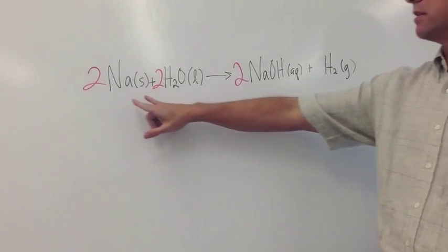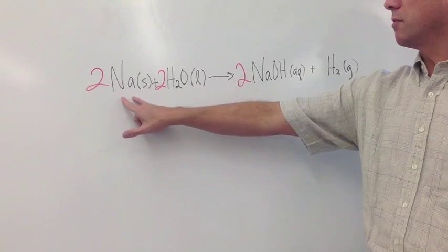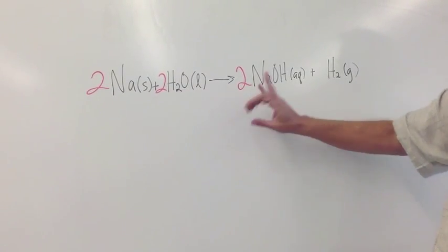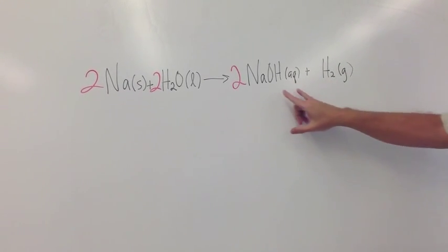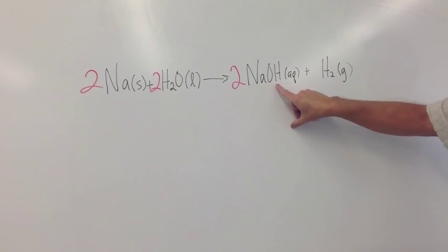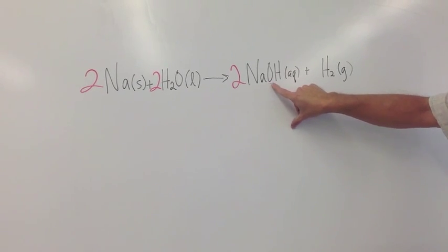So what we're going to do is we're going to take some sodium and we're going to dump it into water. It's going to react with the water to produce two things: it's going to give off hydrogen gas and it's going to give off a base. We know what a base is because bases always end in OH.